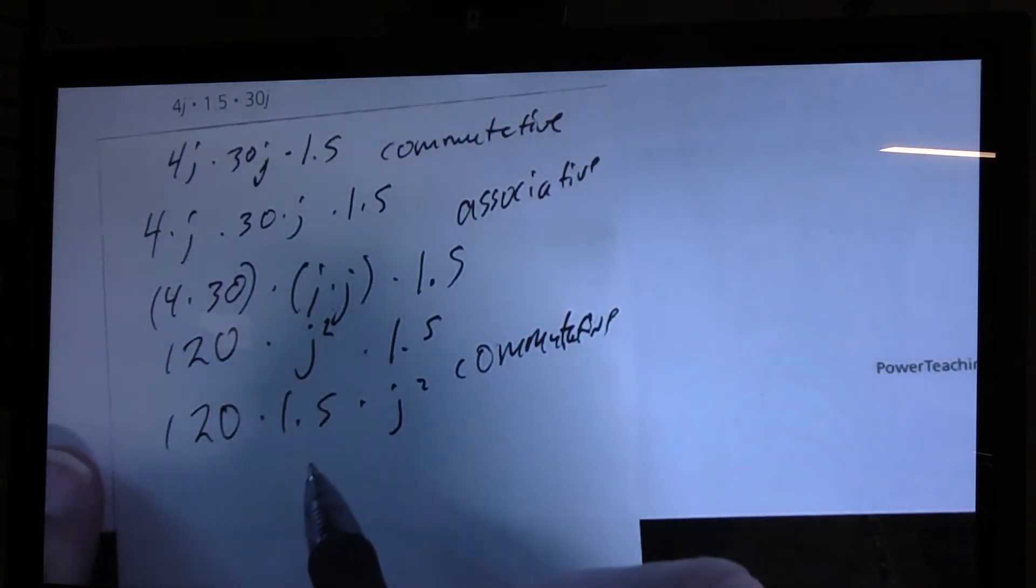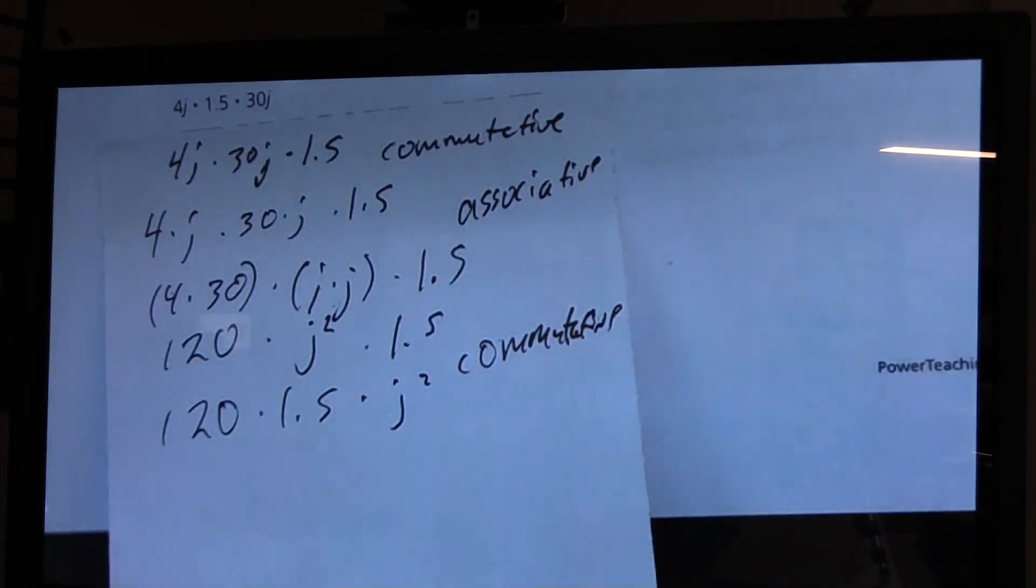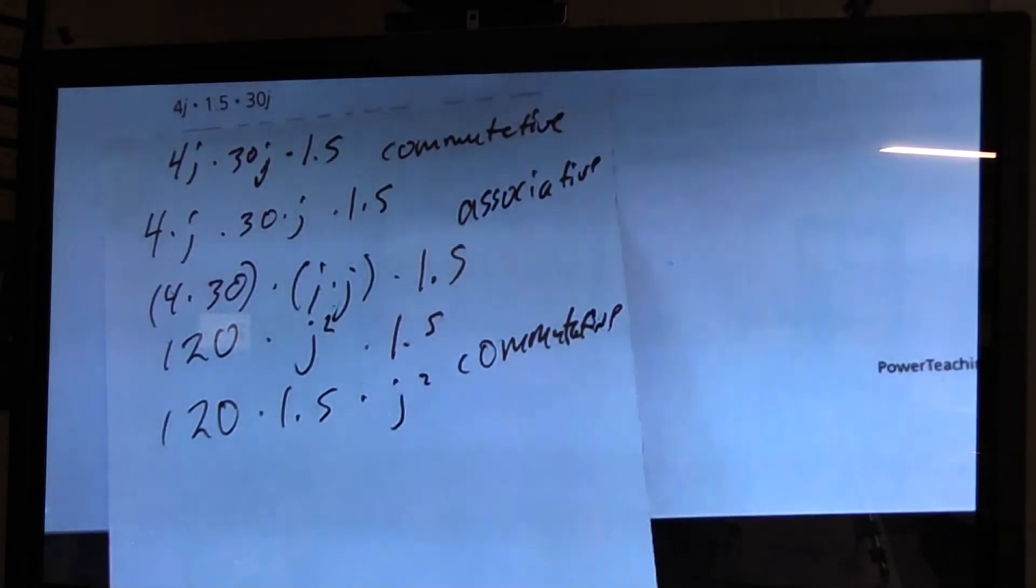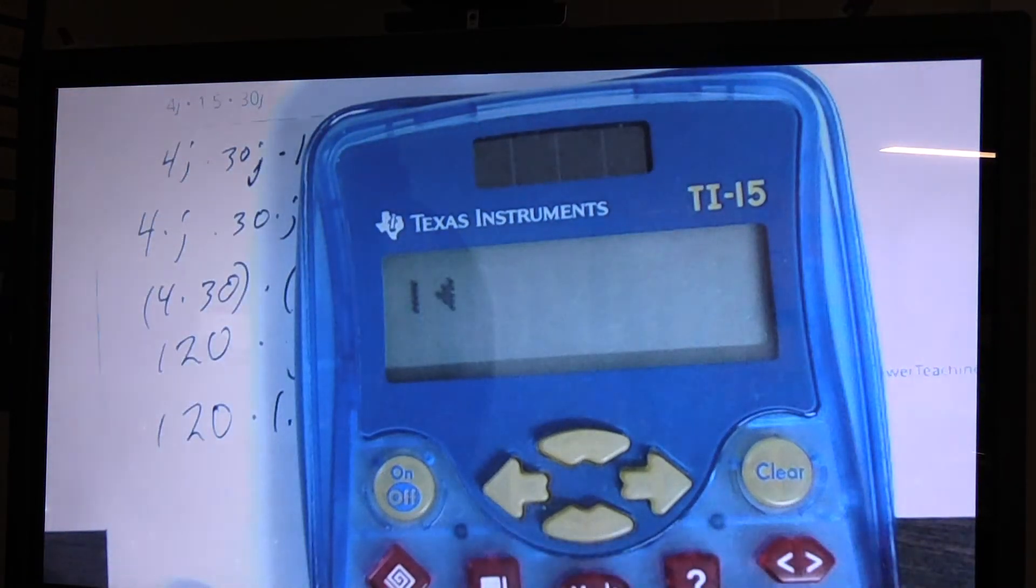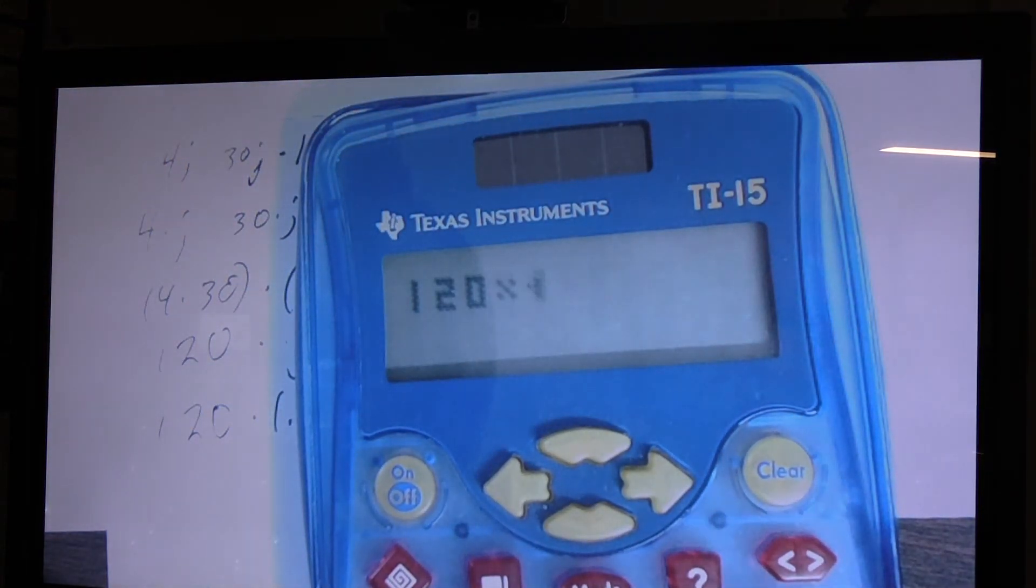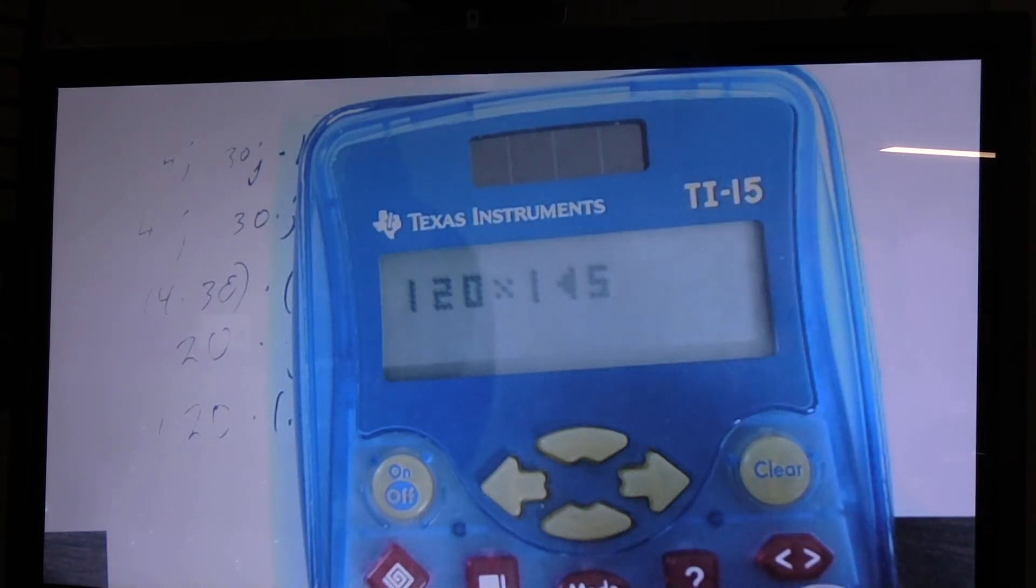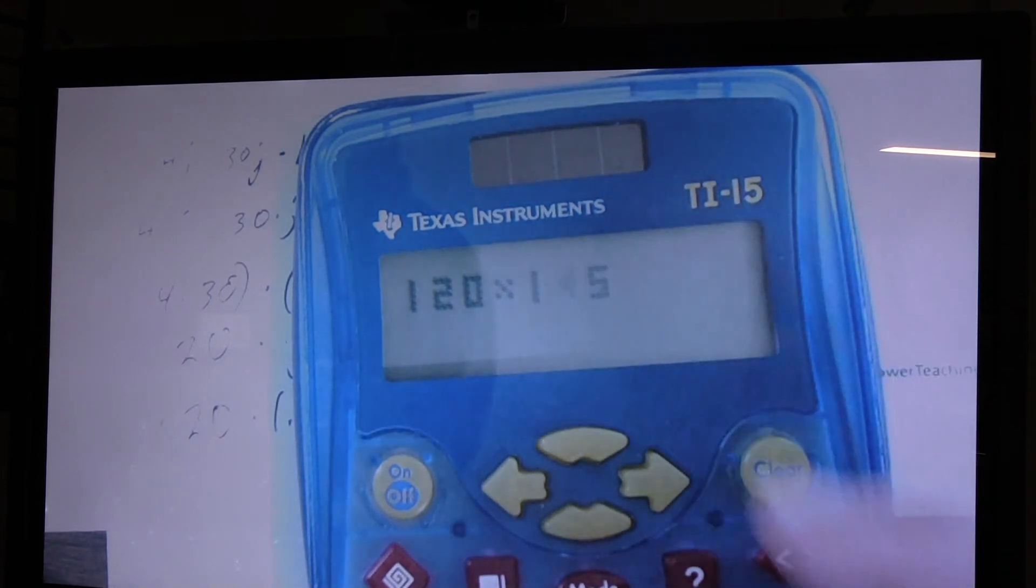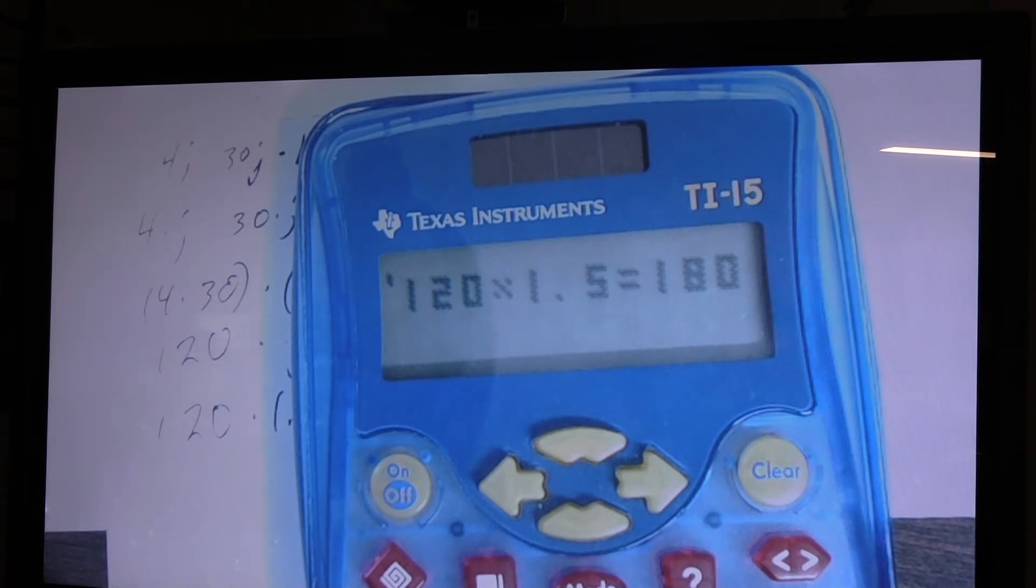Now, if I have 120 times 1 and a half, times 1 and a half. Well, I'm just going to go ahead and use my calculator on that. When you take the prep test at the end, you will be able to use the calculators on some items. So I'm just going to go ahead and show this one. I'm going to go ahead and say 120 times 1.5. And it gives us 180.